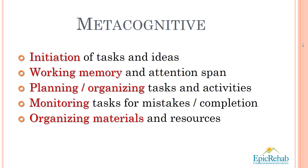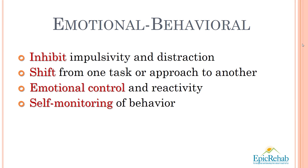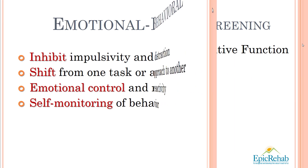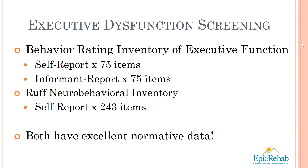There are four major emotional-behavioral types of executive dysfunction: difficulties with inhibiting impulsivity and distraction; limitations in the ability to shift from one task or approach to another; limited emotional control and reactivity; and diminished self-monitoring of behavior. Whenever I work with a person who has experienced a concussion, stroke, physical insult to the brain, or a brain disease, I screen for executive dysfunction.